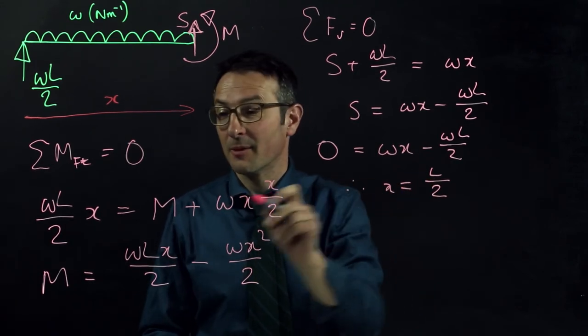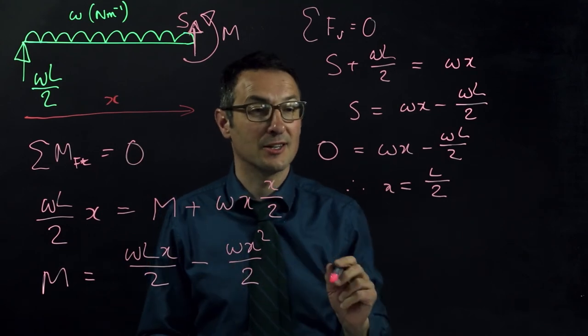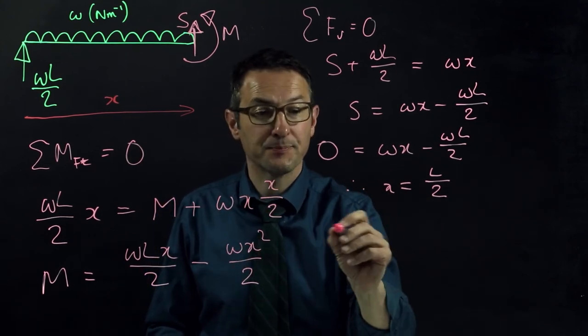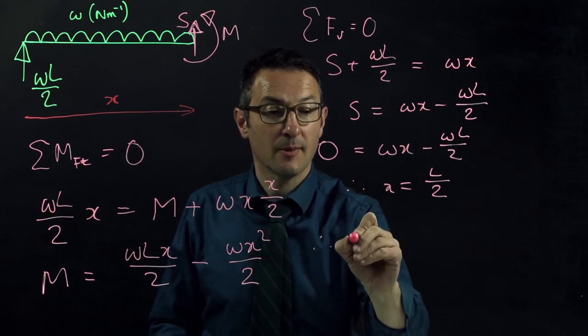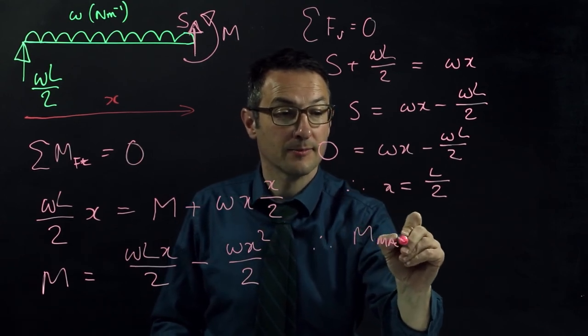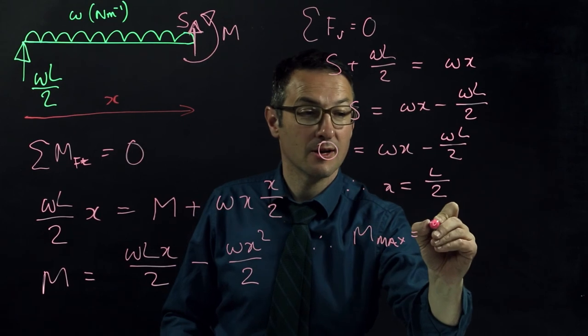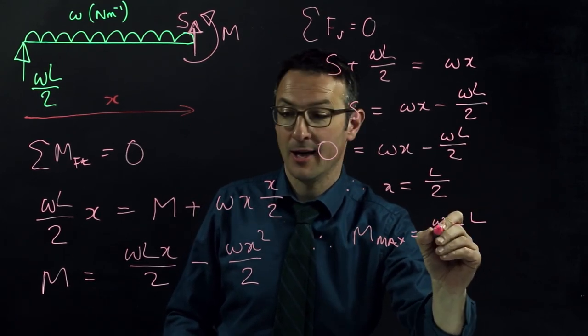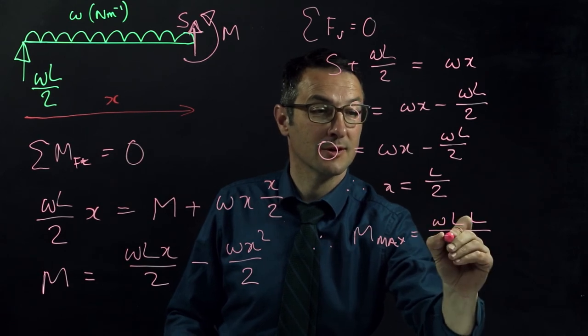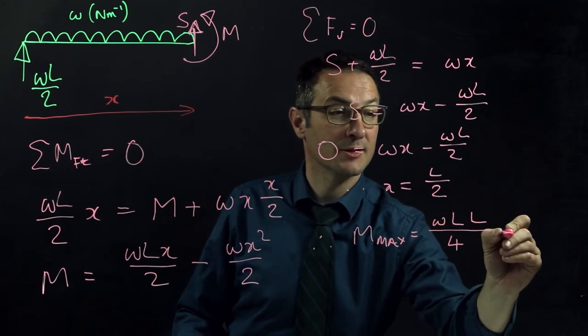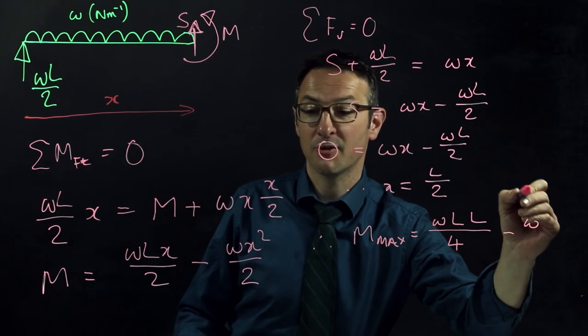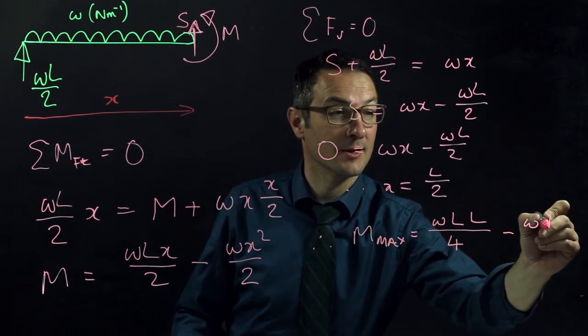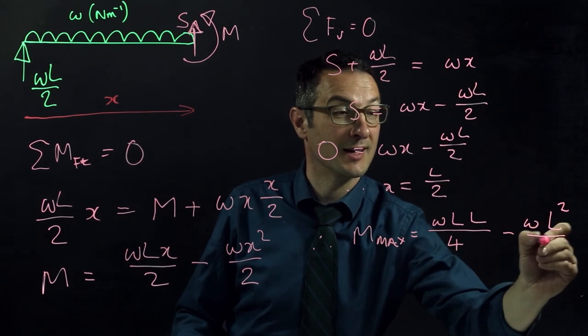No big surprises. That means that the maximum moment occurs when x equals L over 2. So I can plug that into the equation for M. So M max equals W times L times by L over 2, so that's all over 4, minus W times by L squared over 2, so L squared over 8.